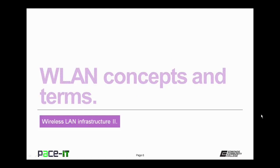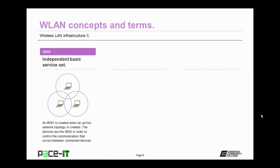Now let's move on to wireless LAN concepts and terms. First up is the IBSS, or Independent Basic Service Set. An IBSS is created when an ad hoc network topology is created. The devices use the IBSS in order to control the communication that occurs between the connected devices.